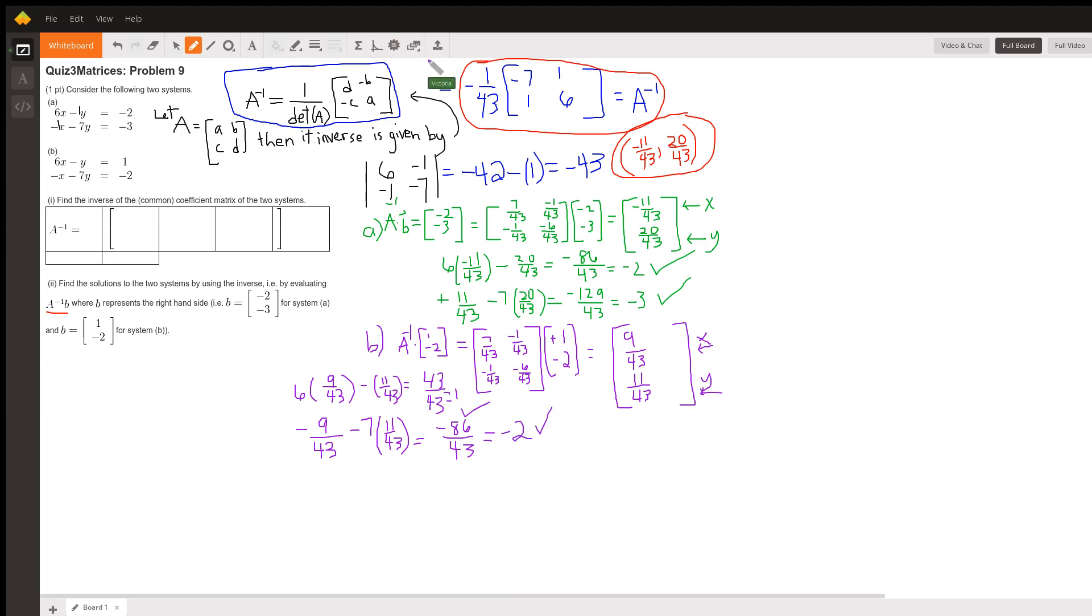I'm pretty sure that your teacher wants this answer as a point. The x coordinate is 9 over 43, and the y coordinate, they were both positive, is 11 over 43. I believe that those are the answers to all of the questions in this problem.